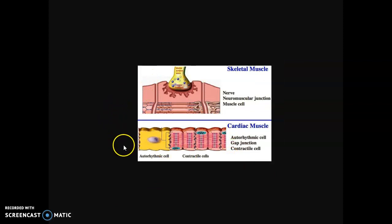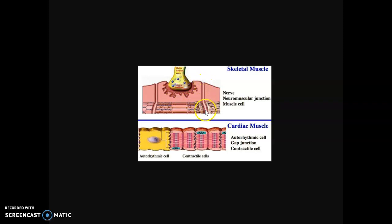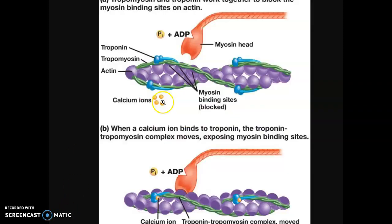The steps of muscle contraction: a signal comes down the motor neuron, telling neurotransmitters to be released. They cross the synapse and bind to the sarcolemma, creating an electrical current that travels across the plasma membrane and down the T-tubule, telling the sarcoplasmic reticulum to release calcium. Calcium binds to troponin, which moves tropomyosin, frees the binding site, and allows the myosin head to grab the actin and pull toward the M-line.